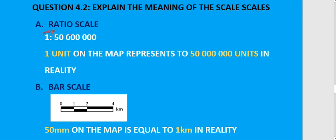The map distance and the number on the right-hand side of your scale represents the real distance. So if we are explaining the meaning of the scale, we would say that one unit — that's the left-hand side — on the map represents, or is equal to, in this case, 50 million units in reality. And that would be the meaning of that ratio scale.